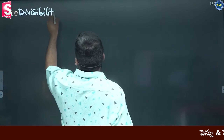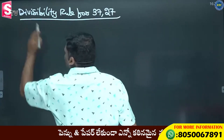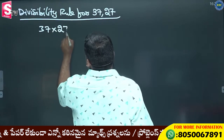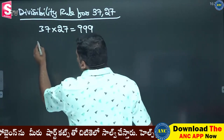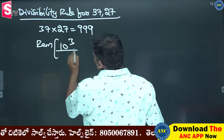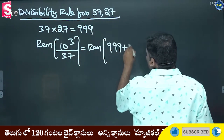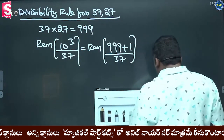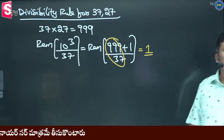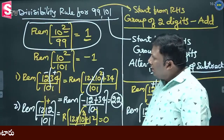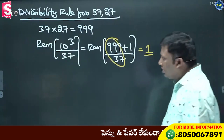Divisibility rule for 37 and 27: 37 into 27 is 999. 999 is close to 1000. So 10 cube divided by 37 — 1000 is 999 plus 1 divided by 37. 999 is perfectly divisible by 37, so the remainder when 10 cube is divided by 37 is 1. Same logic: group of 2 digits, start from right-hand side, came the same way.